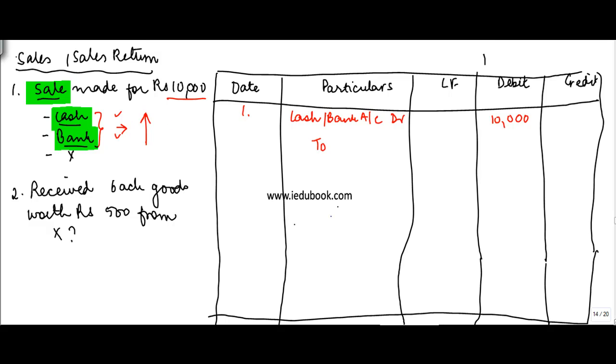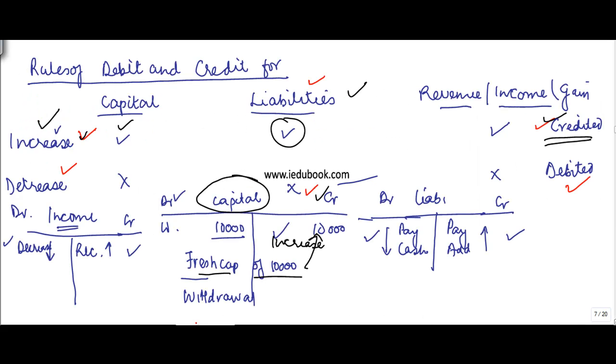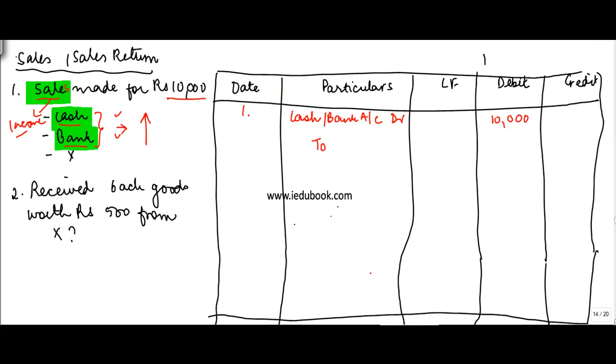Which is the other account? Of course, the sales account. Sales is what? Sales is an income account. Increase in income is what? Increase in revenue or income is credited, right? So we credit sales account. And the narration will be: being sales made for cash, bank, or whatever. Now what happens in case you make a sale on credit?